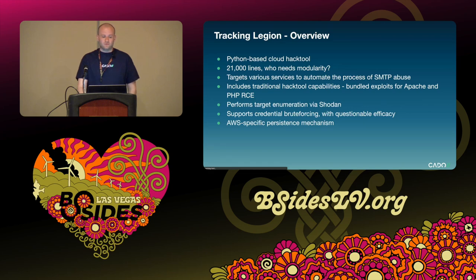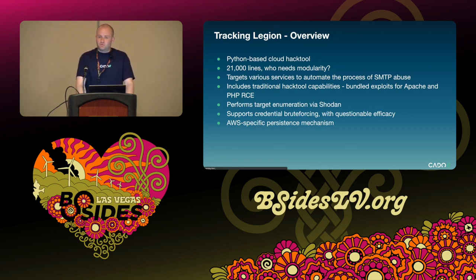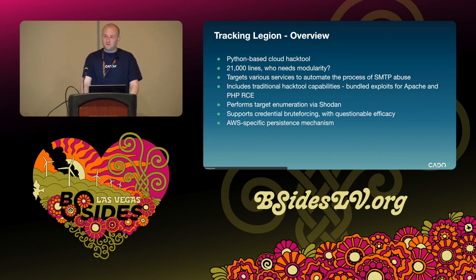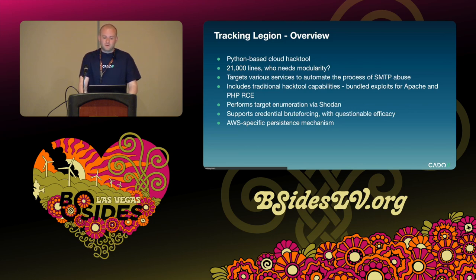Legion is written in Python and designed to exploit misconfigured web servers for the purpose of harvesting credentials. The tool automates the process of gathering credentials which provide access to cloud-based SMTP services. Legion will then attempt to access these services and send test emails on behalf of the operator in preparation for spamming campaigns. Legion executables aren't particularly difficult to analyze, though they tend to be around 21,000 lines long, suggesting the developers have yet to learn the concept of modularity.